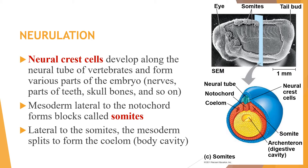Mesoderm lateral to the notochord forms blocks called somites. The neural crest cells develop along the neural tube of the vertebrae and form various parts of the embryo, like nerves, parts of the teeth, skull bones, and so on. Lateral to the somites, the mesoderm spreads to form the coelom or body cavity. In the cross-section, you will see the archenteron, which will eventually develop as your digestive cavity, along with the somites, neural crest cells, the neural tube at the middle, the notochord that will eventually become your spinal cord, and the coelom.